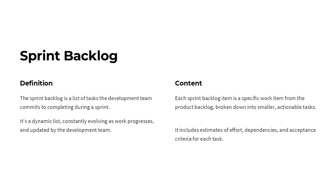The sprint backlog is a list of tasks the development team commits to completing during a sprint. It's a dynamic list that's constantly evolving as work progresses, updated by the development team. Each sprint backlog item is a specific work item from the product backlog broken down into smaller, actionable tasks. The sprint backlog includes estimates of effort, dependencies, and acceptance criteria for each task.